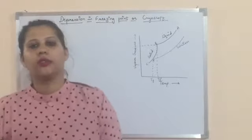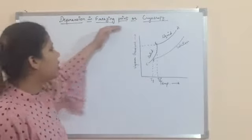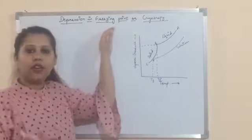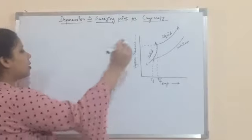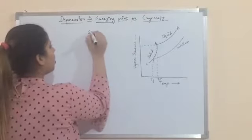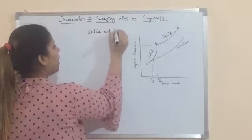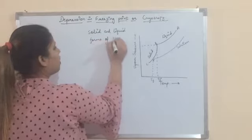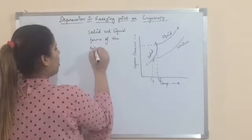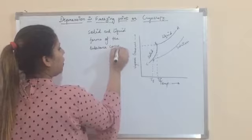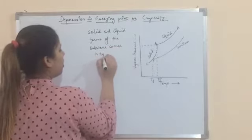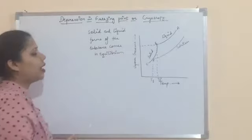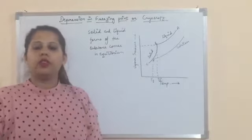Hi everyone. The last colligative property is depression in freezing point, also called cryoscopy. The freezing point is that temperature at which the solid and liquid forms of the substance come in equilibrium, or we can say that at this temperature the vapor pressure of solid and liquid becomes equal.